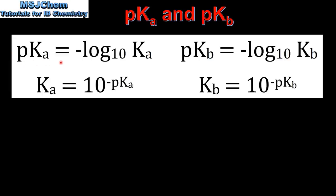pKa is equal to the negative log to the base 10 of the Ka, and Ka is equal to 10 to the power of the negative pKa. pKb is equal to the negative log to the base 10 of the Kb, and Kb equals 10 to the power of the negative pKb.